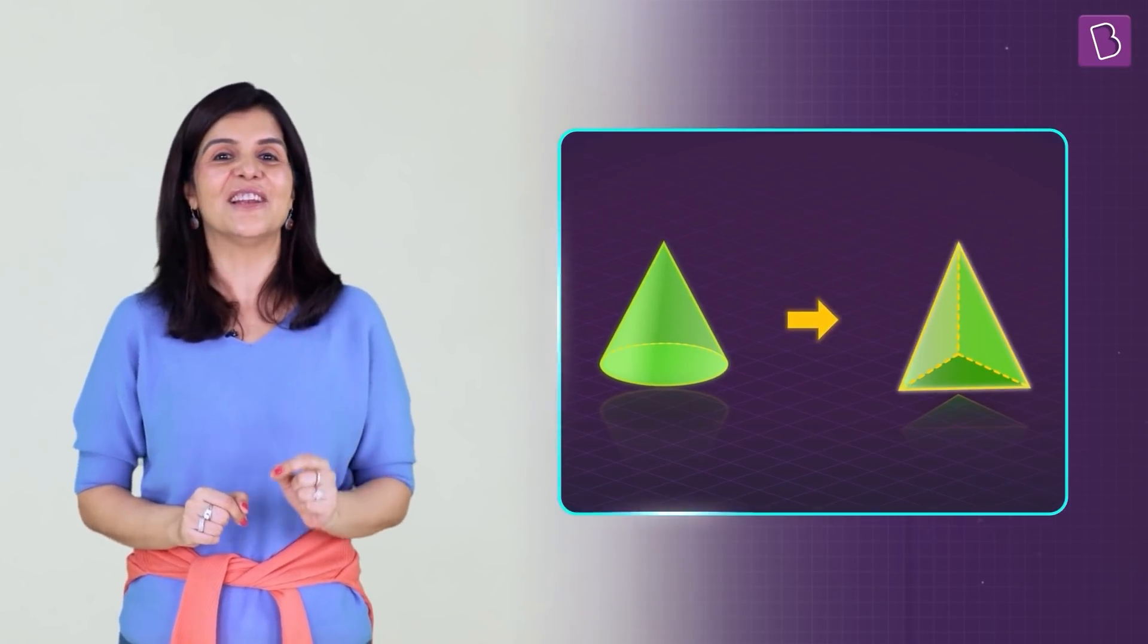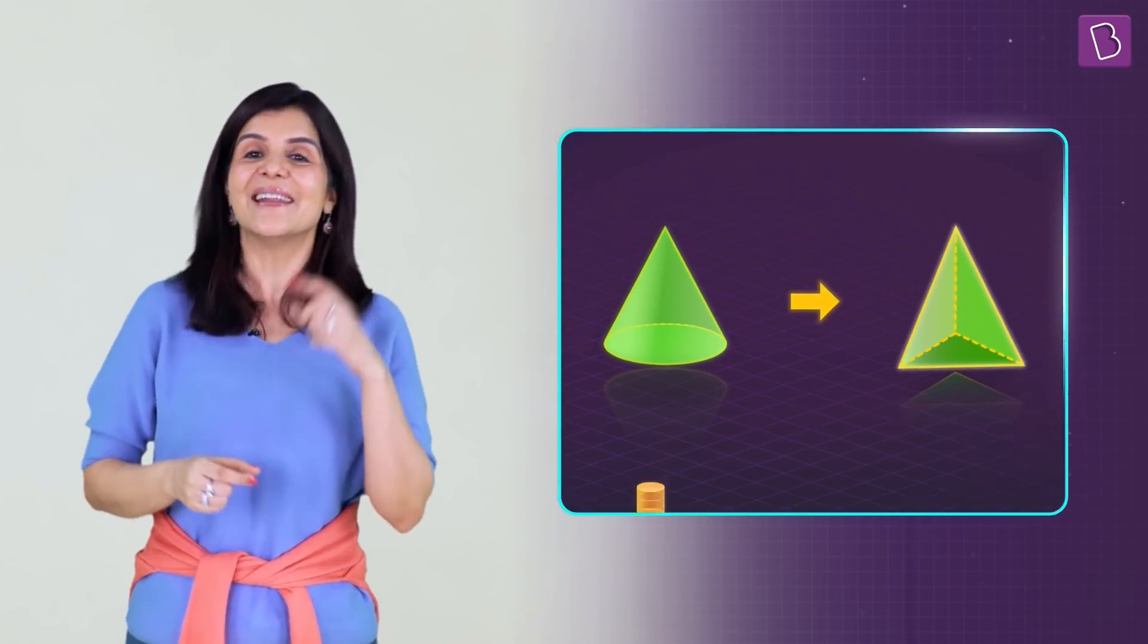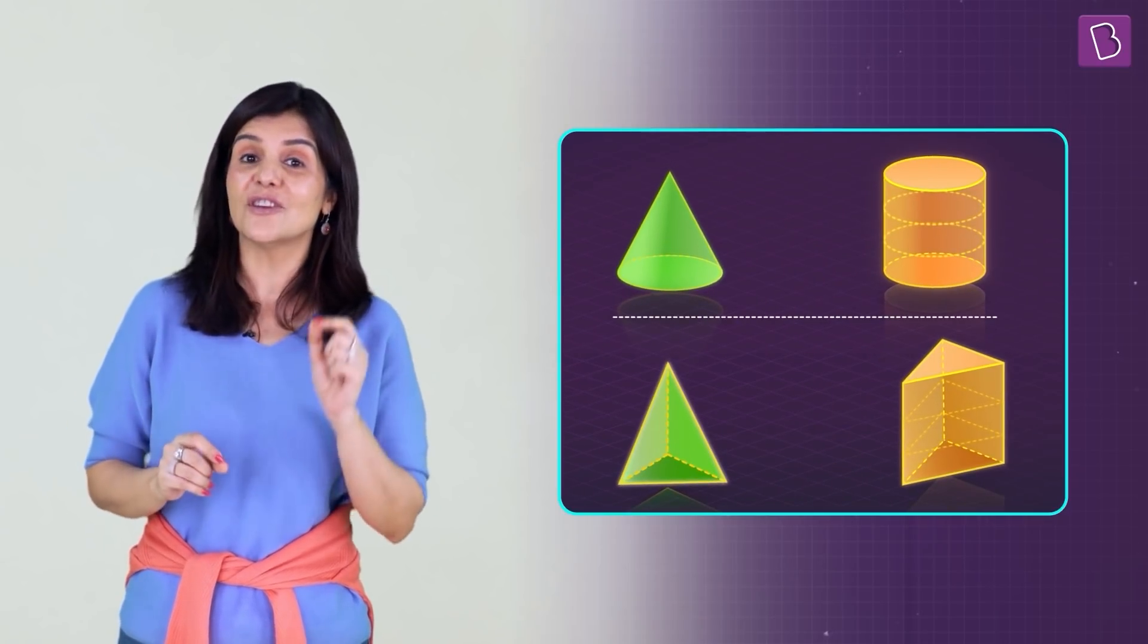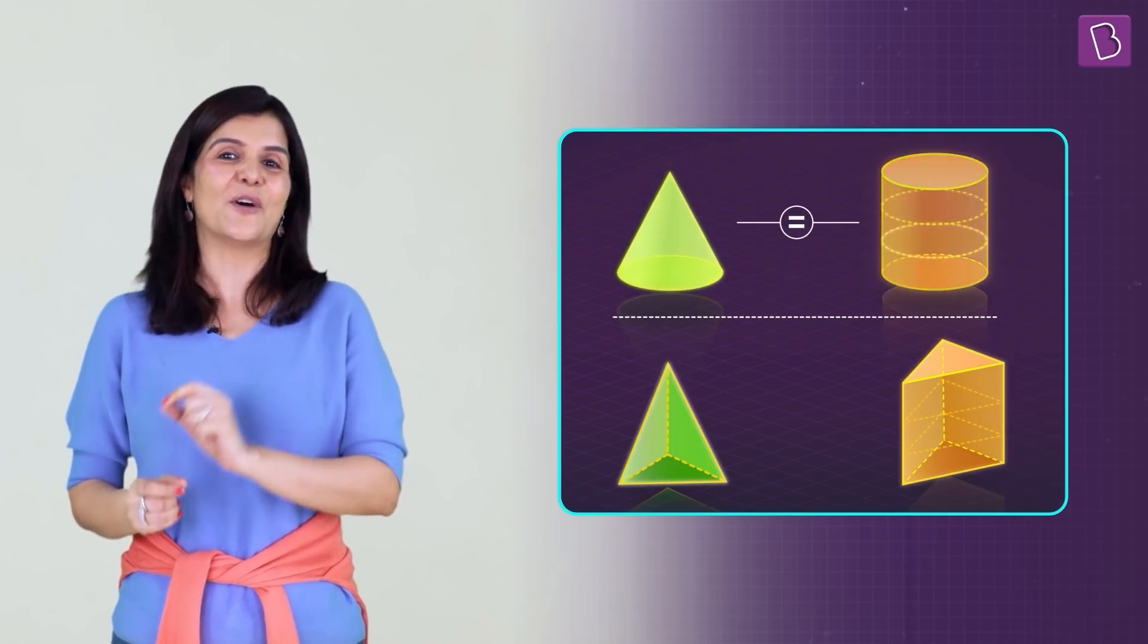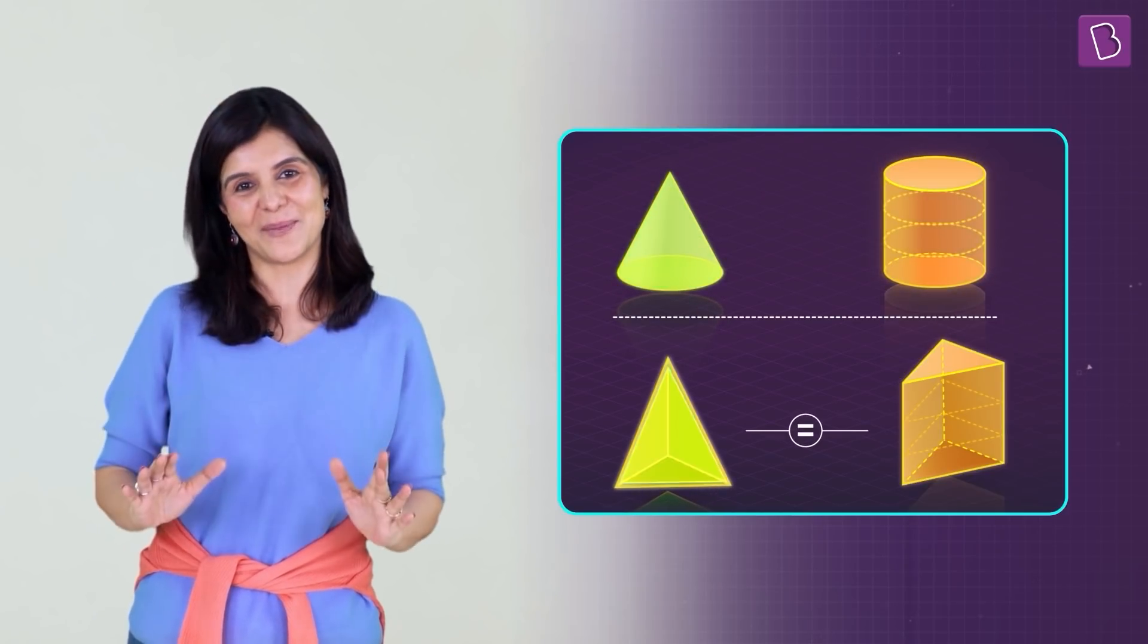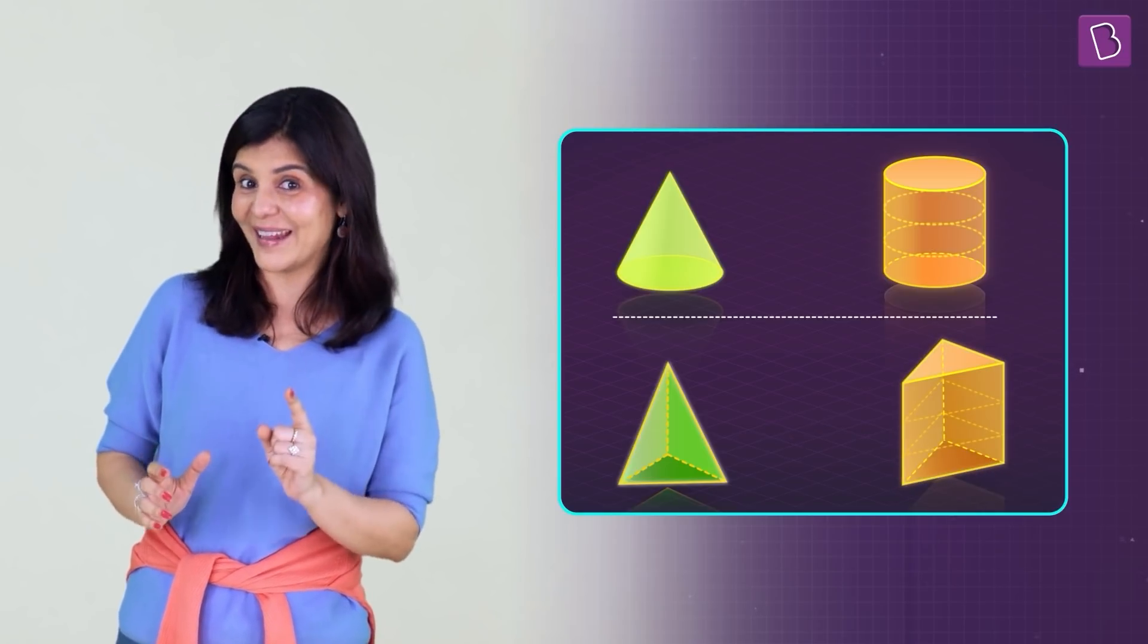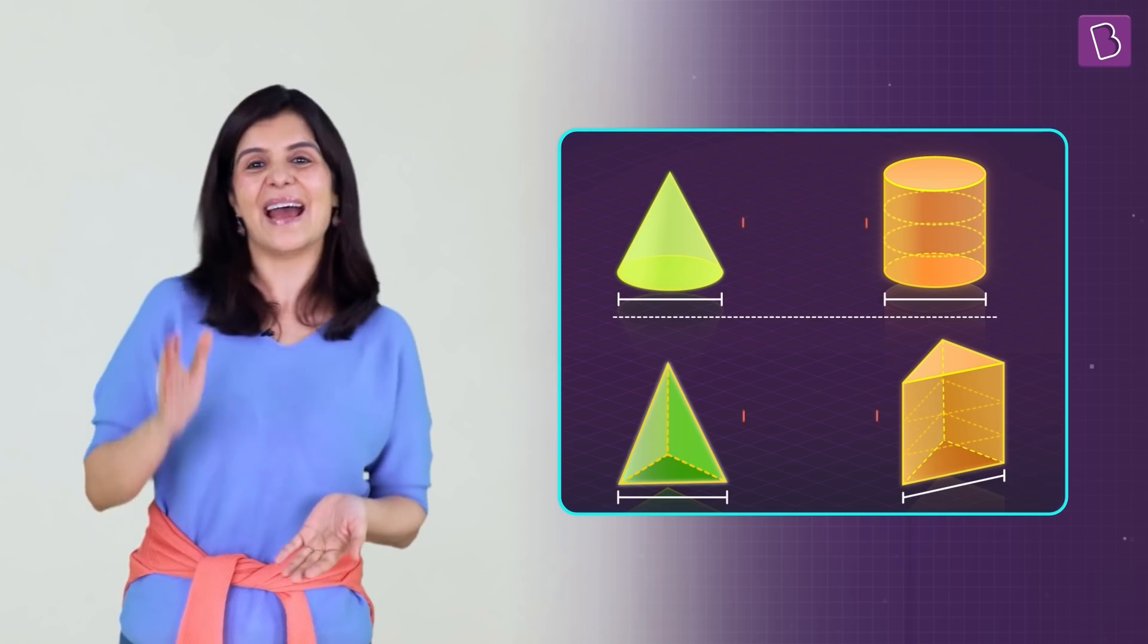How about you try this at home with different pyramids and prisms? We can keep changing our bases to pentagonal, hexagonal and so on. And the relationship will still remain the same. In fact, a cone is actually a circular pyramid and a cylinder is a circular prism. So actually, not just a cone has one third the volume of a cylinder, but all pyramids have one third the volume of the prisms provided they have the same bases and heights.